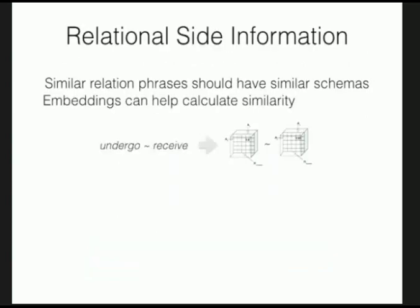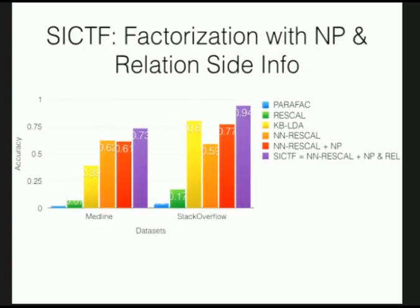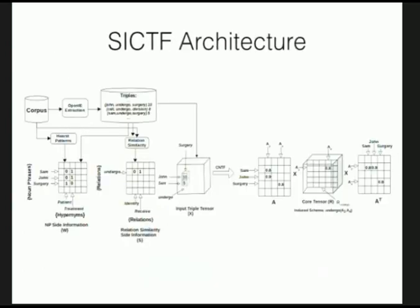We also added relation side information: in the medical domain, 'patients undergoing surgery' and 'patients receiving treatment' have similar meaning, so we require their respective slices in the core tensor to be similar to each other. Putting all of these constraints together gives the final model called SIGF, which outperforms the KBLDA baseline by a significant margin on both datasets. SIGF also achieves about an 11x speedup in runtime compared to the topic-modeling-based baseline.